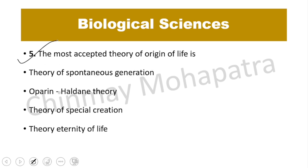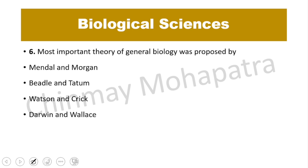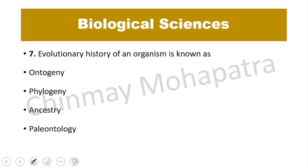Question number 5. The most accepted theory of the origin of life is? The Oparin-Haldane theory is the right answer. Question number 6. The most important theory of general biology was proposed by? Darwin and Wallace is the right answer.